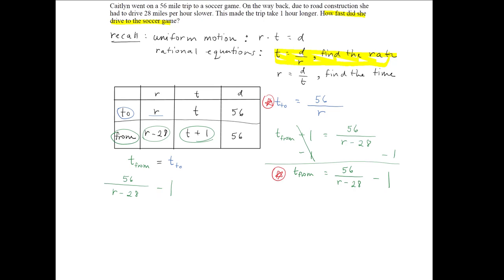equal to the time it took to get to the soccer game, which is 56 divided by r, and now all we have to do is solve, and we can find the rate.